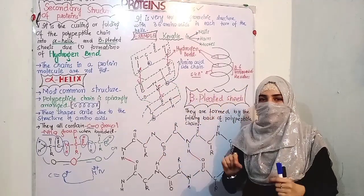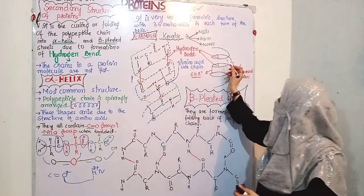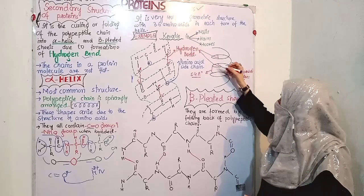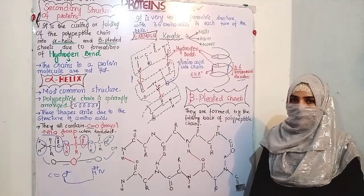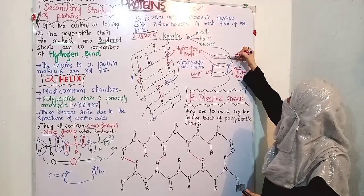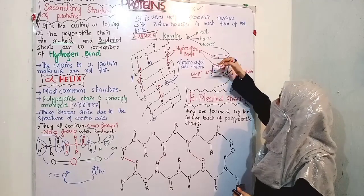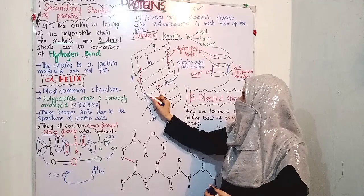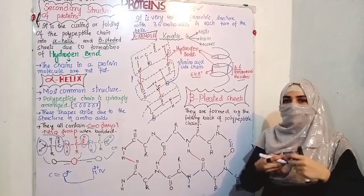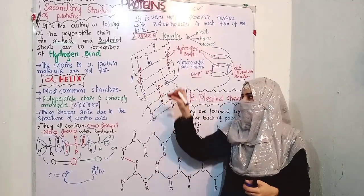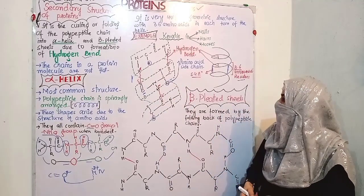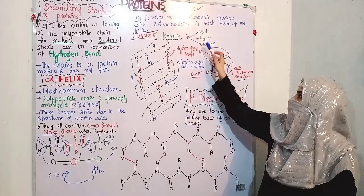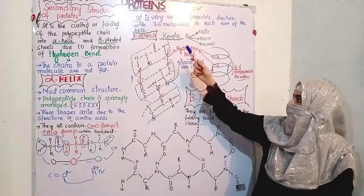The next turn also has 3.6 residues, and the distance of every turn is 5.4 Angstroms. You have to remember these two things for MCQs. The red lines shown represent hydrogen bonds, which are responsible for the curling of the chain.